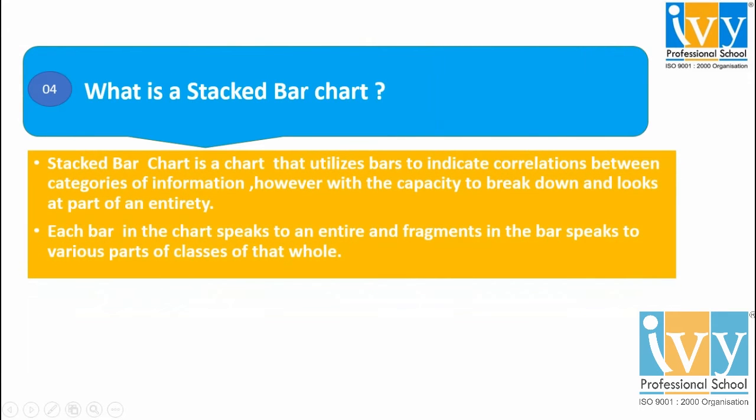Question number 4: What is a stacked bar chart? A stacked bar chart utilizes bars to indicate correlation between categories of information, where we break down the bars and look at parts of an entirety. Each bar is like an entire chart, and fragments in the bar speak to various parts of classes of that whole.